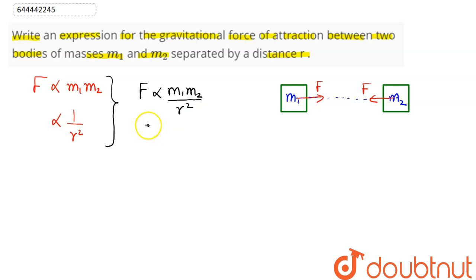This law is known as Newton's law of gravitation force, which states that the attractive force acting between these two bodies is of the magnitude F = Gm₁m₂/r².